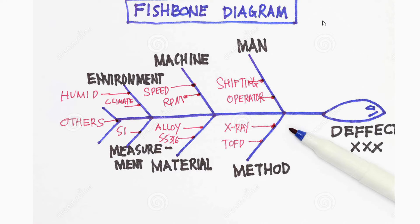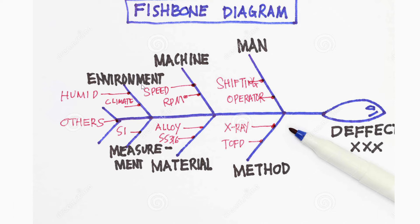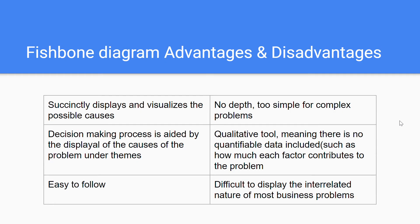This is a small depiction of the fishbone diagram. On the right you can see the head with the problem, and then the four M's we just talked about — though here they have it a little different, putting in method, measurement, and environment, which are not included in the IB version. Within these main roots you can see the smaller detailed problems; for example, under machines there's the speed of the machines and the RPM, or under environment it might be too humid or climate-related, and that might be the cause for the problem.